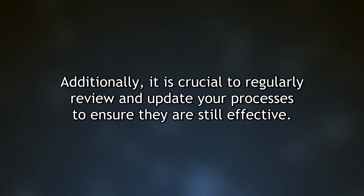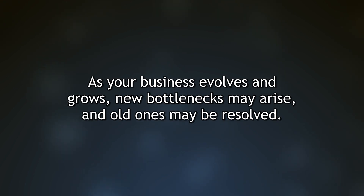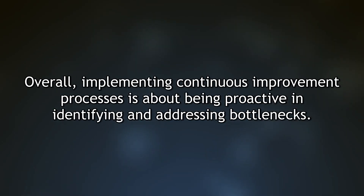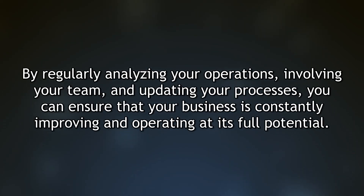It is also crucial to regularly review and update your processes to ensure they remain effective. As your business evolves, new bottlenecks may arise and old ones may be resolved. By constantly monitoring and adjusting your processes, you can stay ahead of potential issues and maintain high efficiency. Overall, implementing continuous improvement is about being proactive — regularly analyzing operations, involving your team, and updating processes so your business constantly improves and operates at full potential.